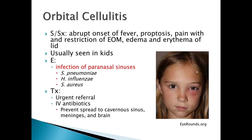The etiology of orbital cellulitis is typically an infection of the paranasal sinuses, with a history of chronic or acute sinusitis preceding it. Causative agents include Strep pneumoniae, H. influenzae, and Staph aureus. Treatment requires an urgent referral. These patients need IV antibiotics immediately, meaning hospitalization, to prevent spread of the infection to the cavernous sinus, meninges, and brain.